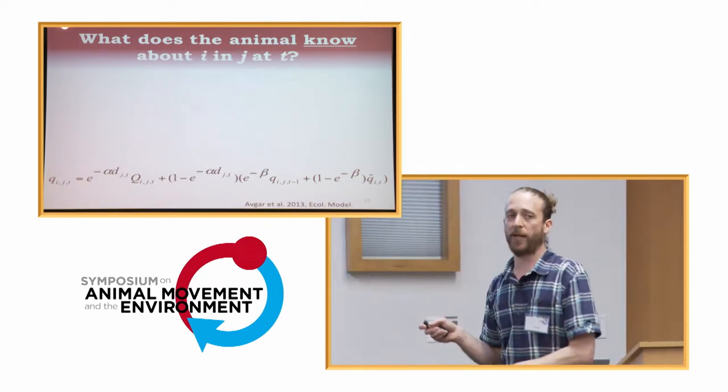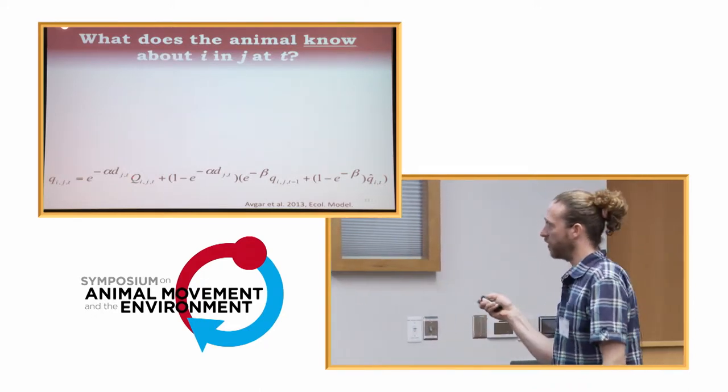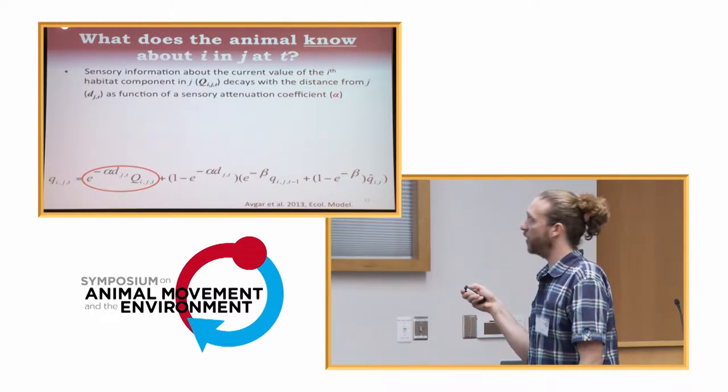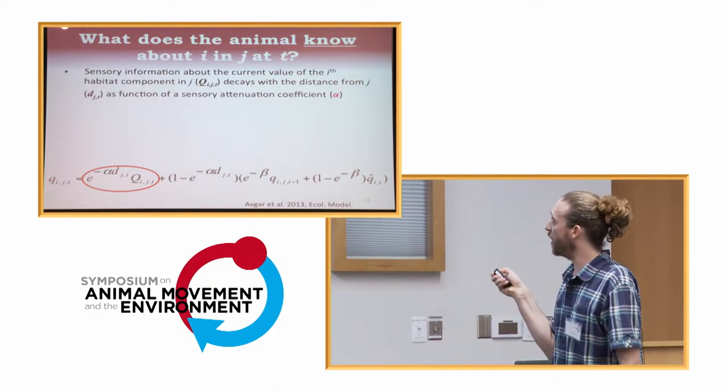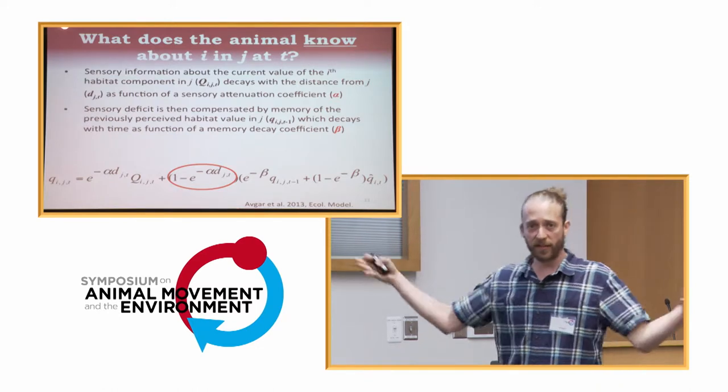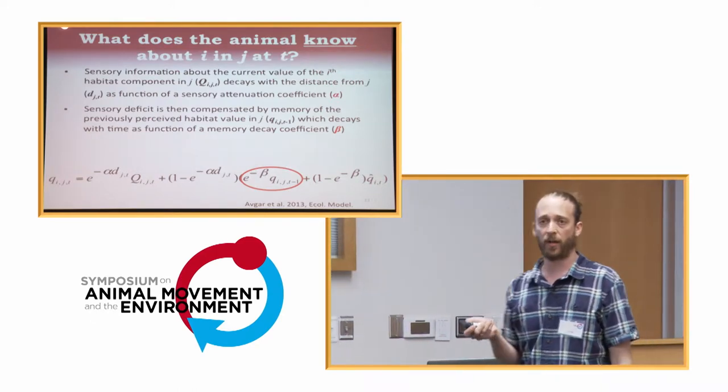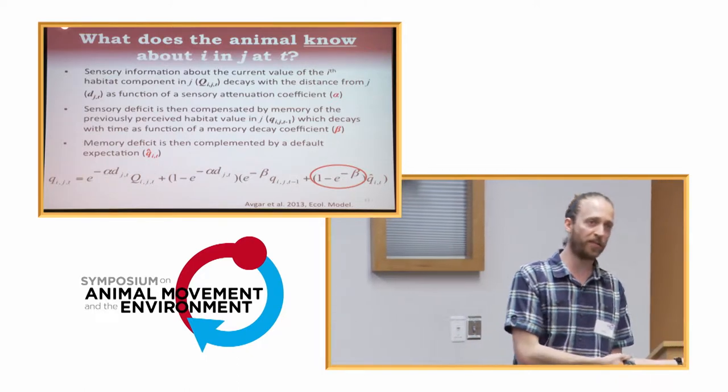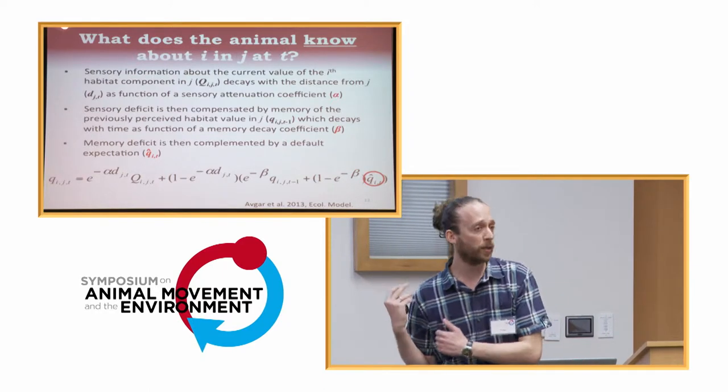So these are already two parameters for the movement and one parameter for each habitat component that we have in the resource selection function. And this is just to briefly explain how the perceived part works. So what the animal knows about those habitat qualities is governed by this recursion equation that is updated through the trajectory. And again, I'm not going too much into details, but the gist of it is that we model sensory information perceived by the animal at each step as function of an exponential decay function that is governed by a sensory attenuation coefficient, alpha. So that's another parameter in the model. We have whatever is not perceived is complemented by memory, what the animal perceived in previous steps, that is governed, the memory decays through time, and the rate of memory decay is governed by the memory decay coefficient, beta. And whatever is not remembered, either because the animal never perceived it or because it's already forgotten it, is complemented by a default expectation that is the third cognitive parameter of this model.